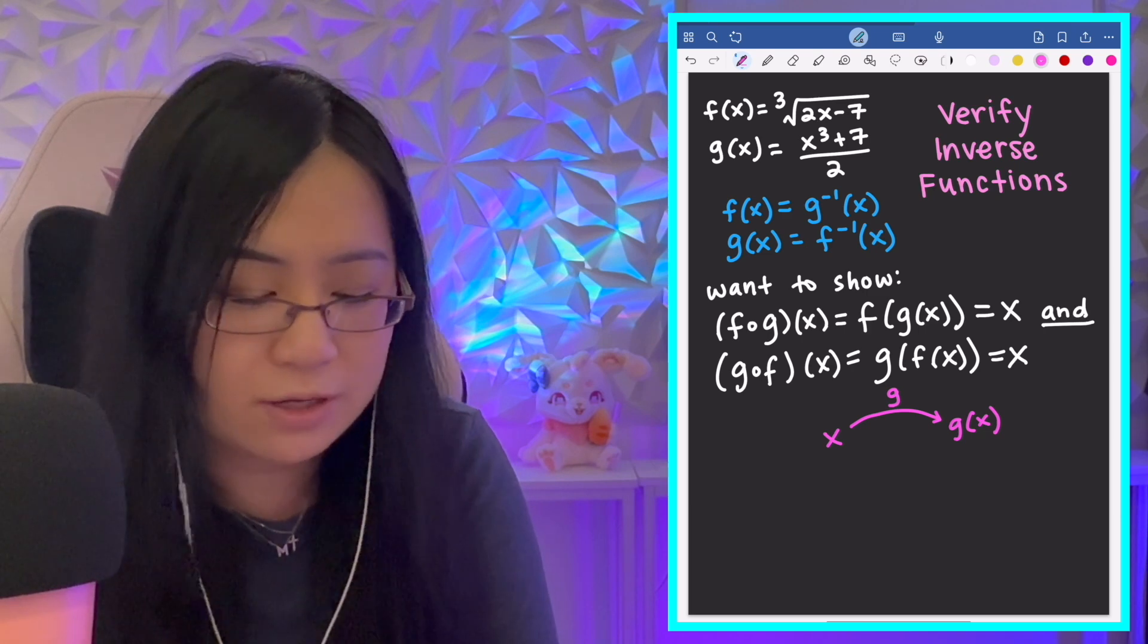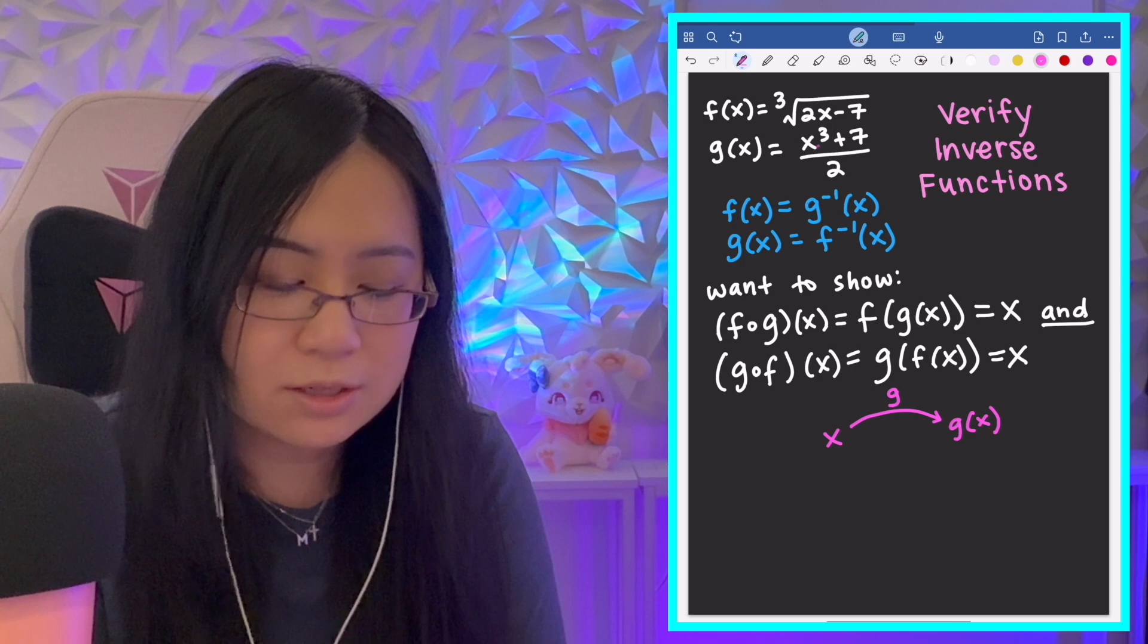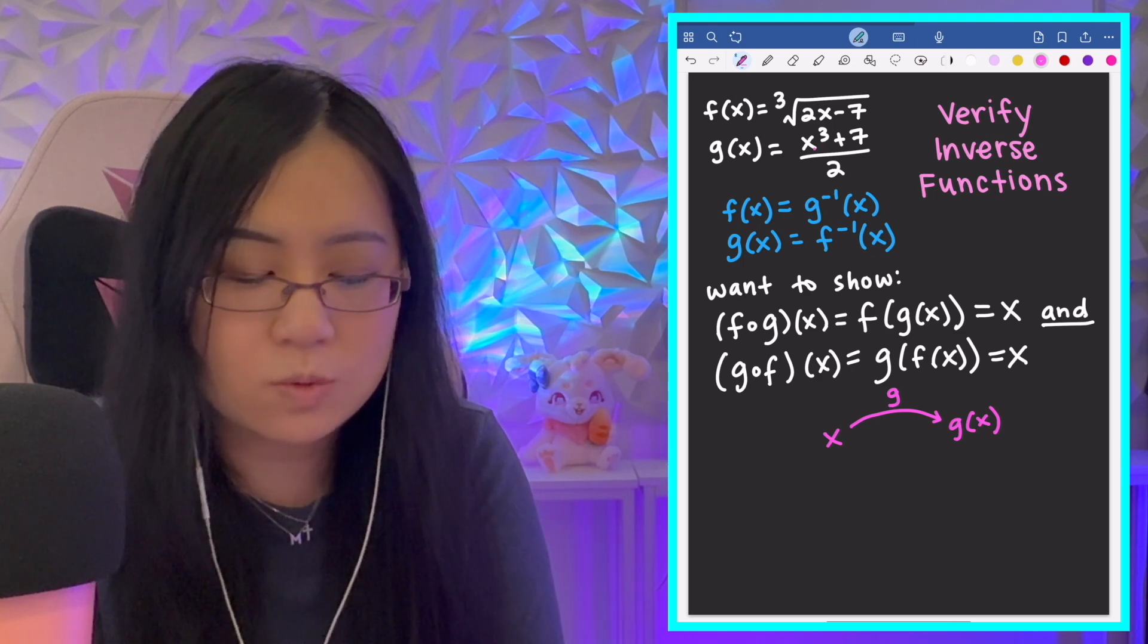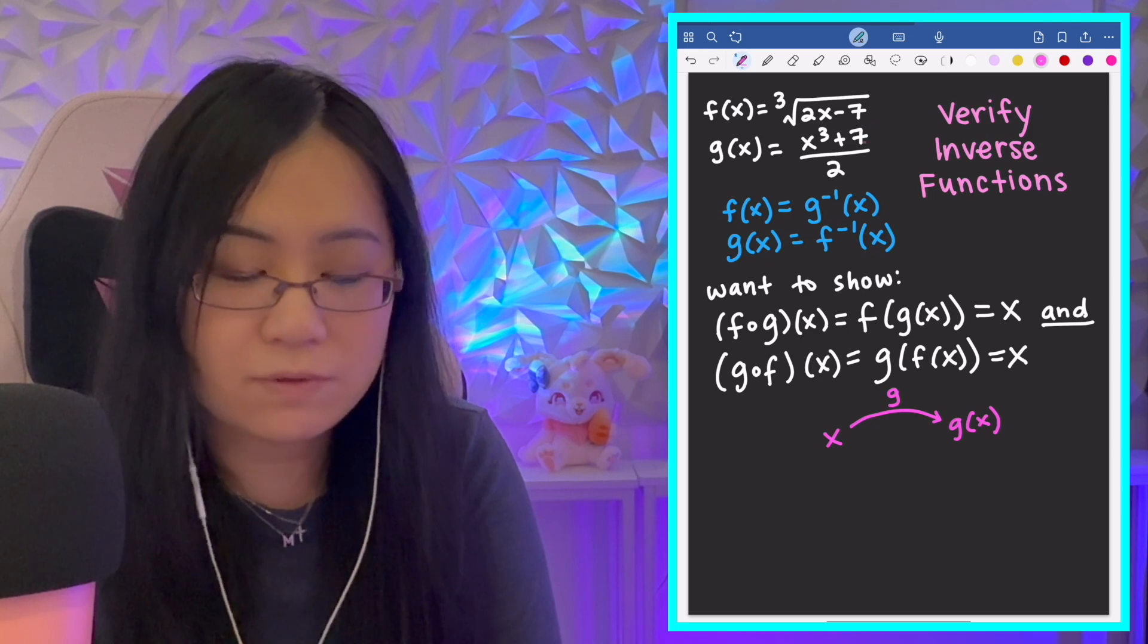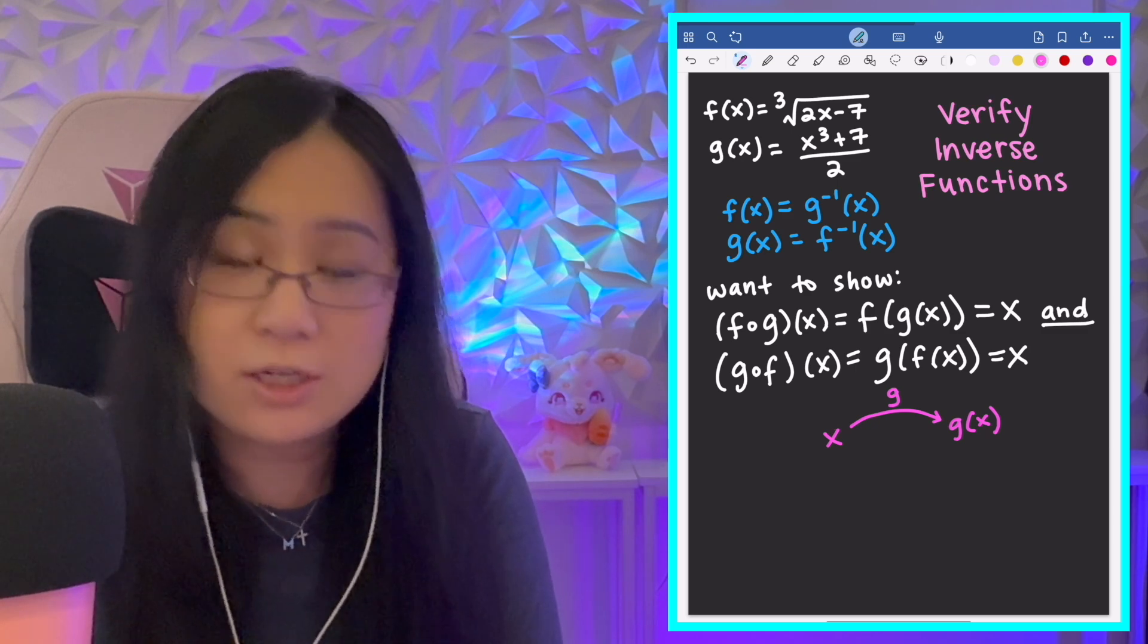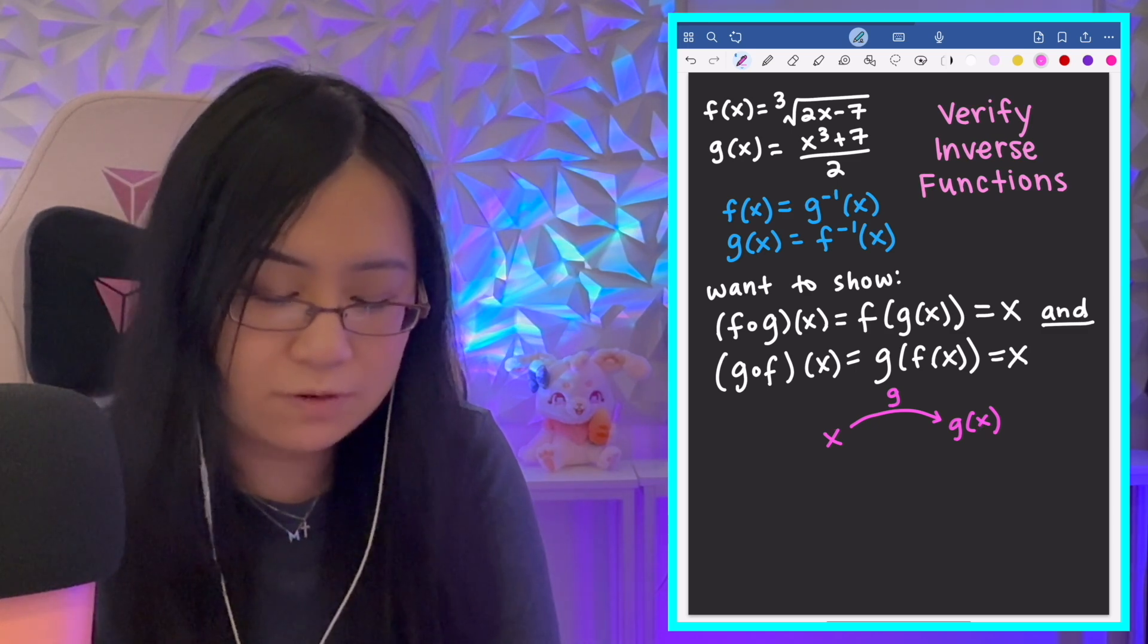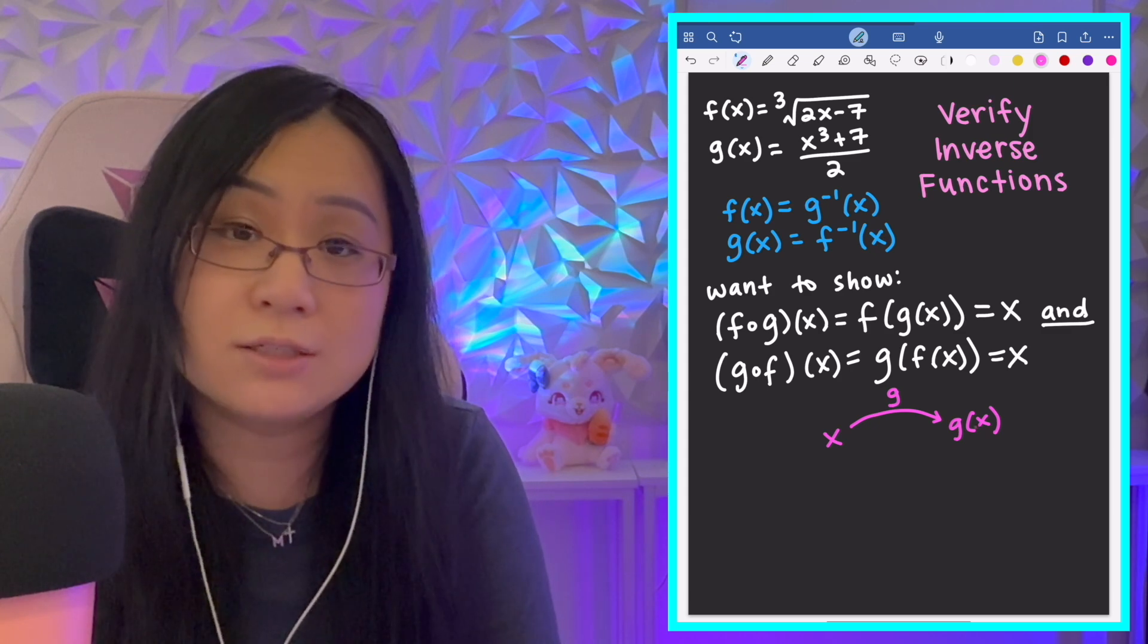So, for instance, if I give you an input of 1 for x, then g(1) equals 1 cubed, which is 1 plus 7, which is 8, divided by 2 is 4. So, g(1) is 4, that kind of thing. So, if I give you an x, then I will get g(x) as an output.